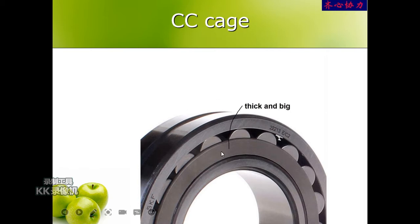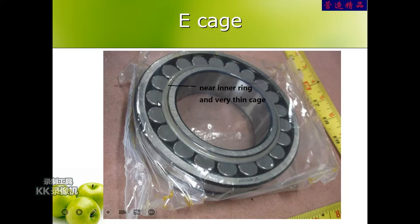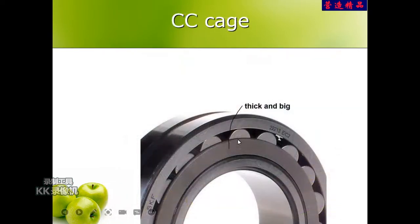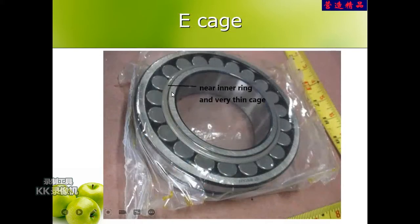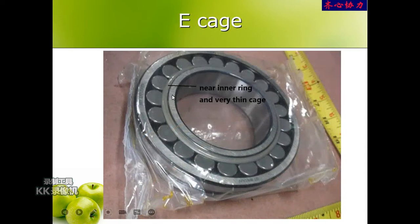Next is the E cage. This cage is similar to the CC cage — also steel, also black or gray — but its structure is different. The E cage is very thin compared to the thick CC cage. This thinner structure allows the bearing to accommodate more and bigger rollers. You can see the rollers here are bigger than in the CC type. This gives the bearing more load capacity, which is why E cage bearings are more expensive. Some SKF bearings of this type have perfect quality.